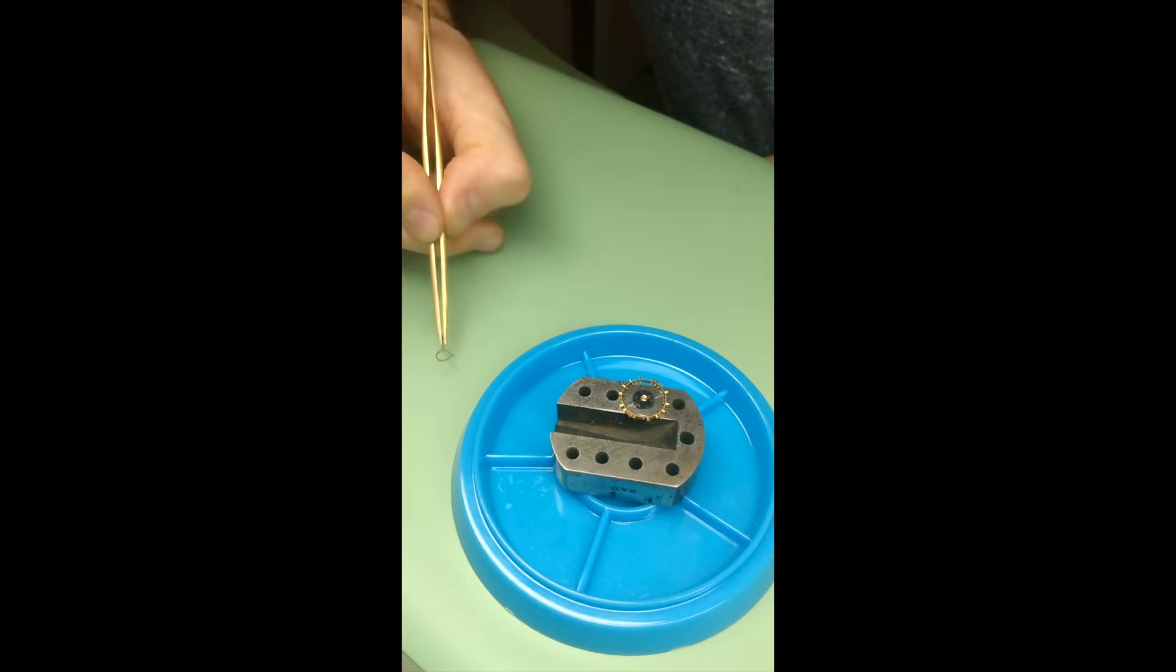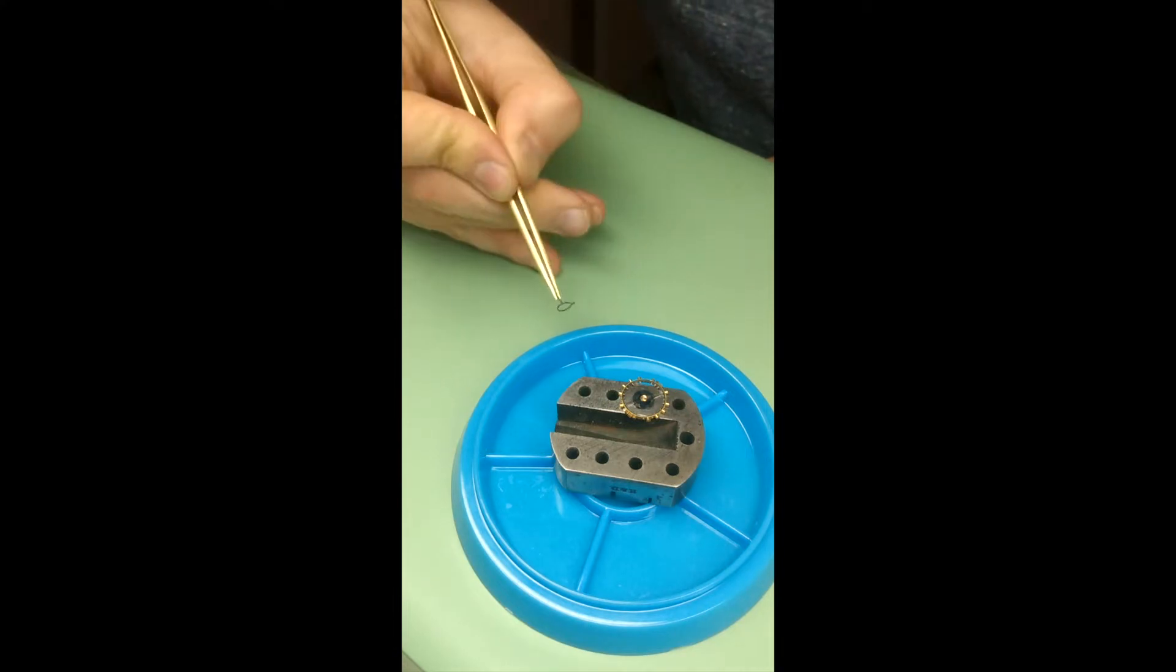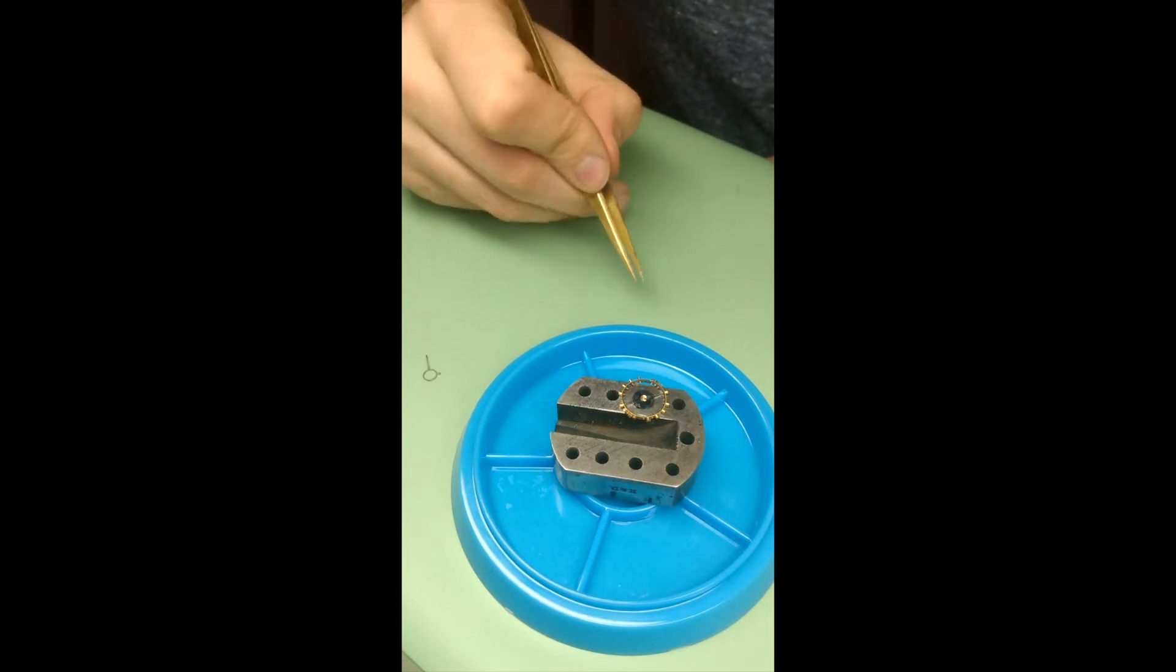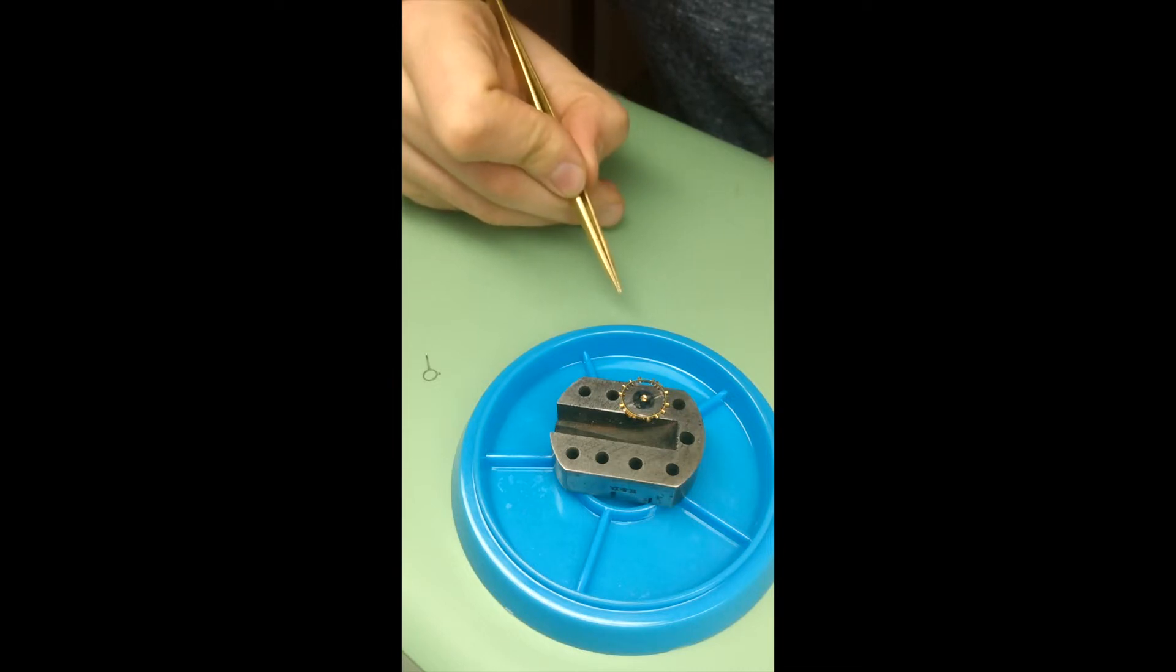The hairspring is straddled by two regulator pins which I will show up close in a second that are attached to this metal regulator. Moving the pins back and forth along the hairspring controls the degree of oscillation of the hairspring and the frequency of oscillation of the balance. In other words, it controls the rate of the watch.